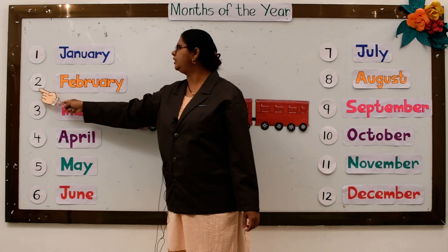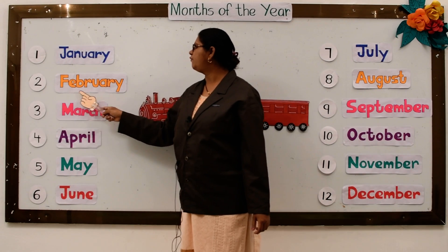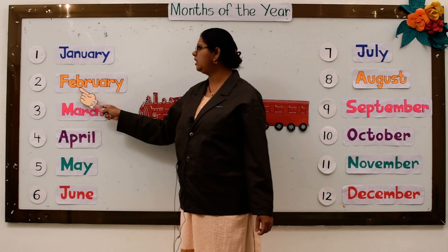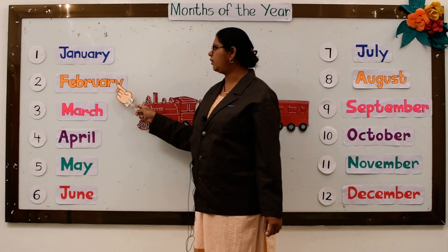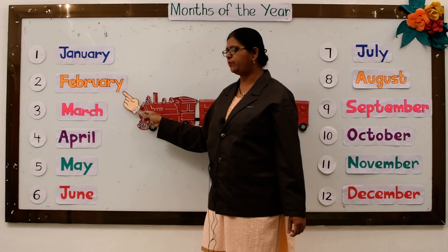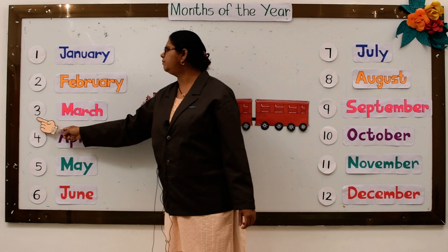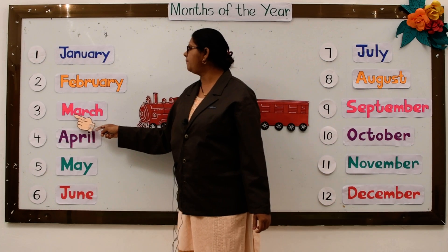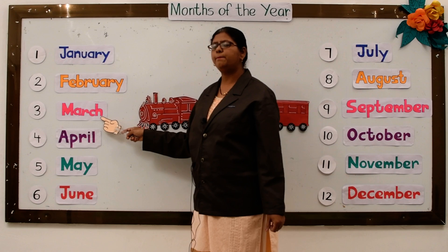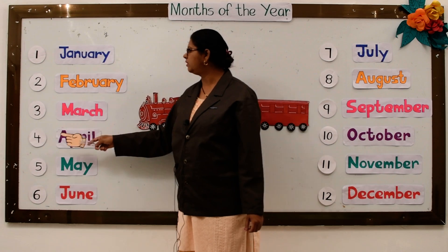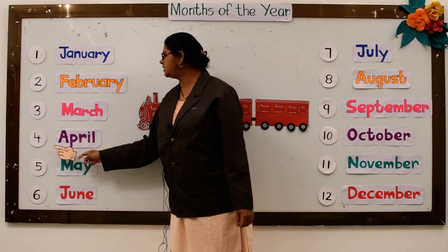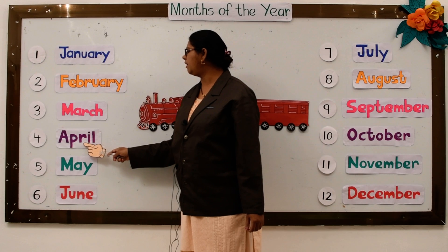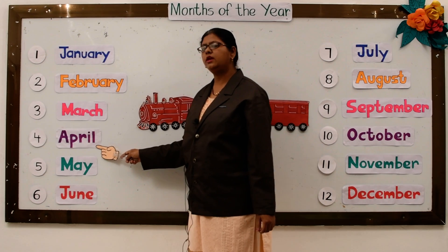The second month of the year is February. F-E-B-R-U-A-R-Y, February. The third month of the year is March. M-A-R-C-H, March. The fourth month of the year is April. A-P-R-I-L, April.